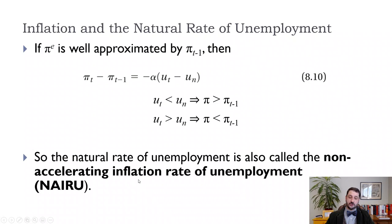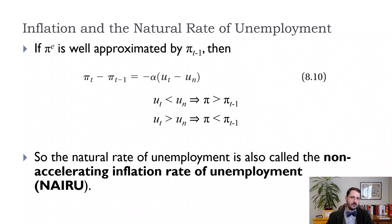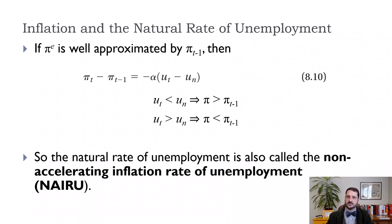This is why the natural rate is called the non-accelerating inflation rate of unemployment, or NAIRU — economists aren't great at naming things. The key takeaway is that if you try to keep unemployment below the natural rate, inflation will keep going up. But we haven't really seen accelerating inflation in recent decades despite periods of very low unemployment, which means either this theory is wrong, the natural rate is quite low, or the unemployment-inflation relationship has changed over the last 40 years.